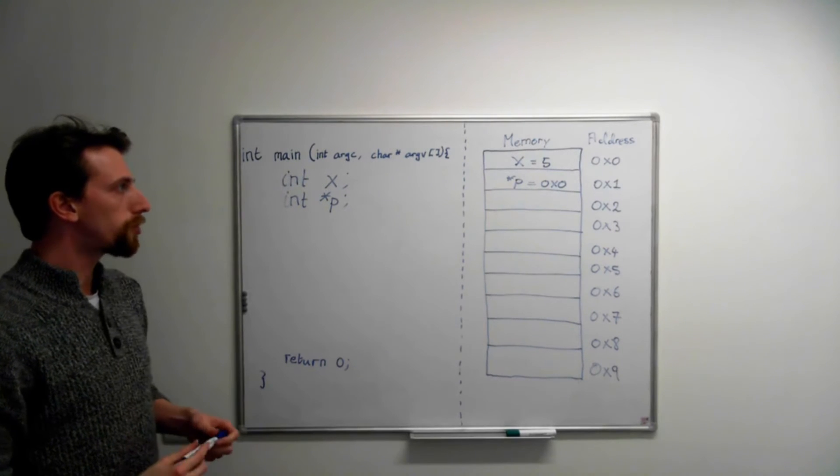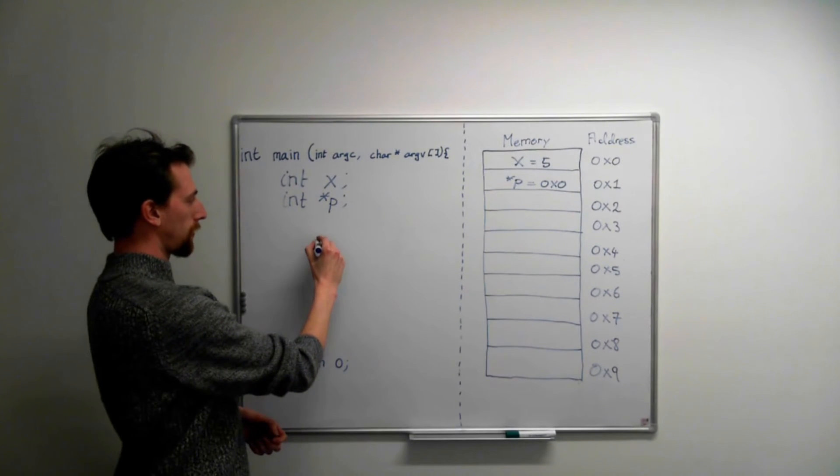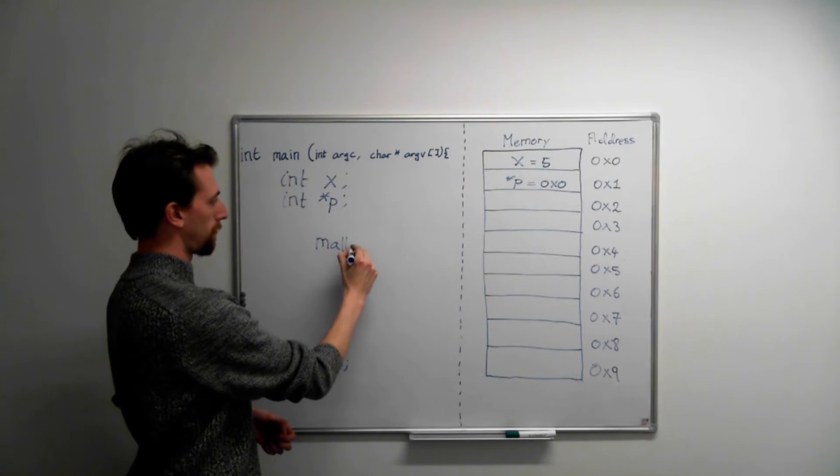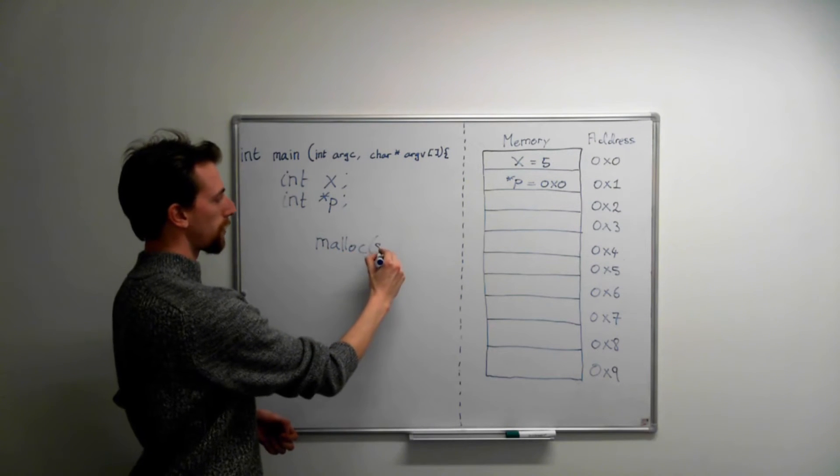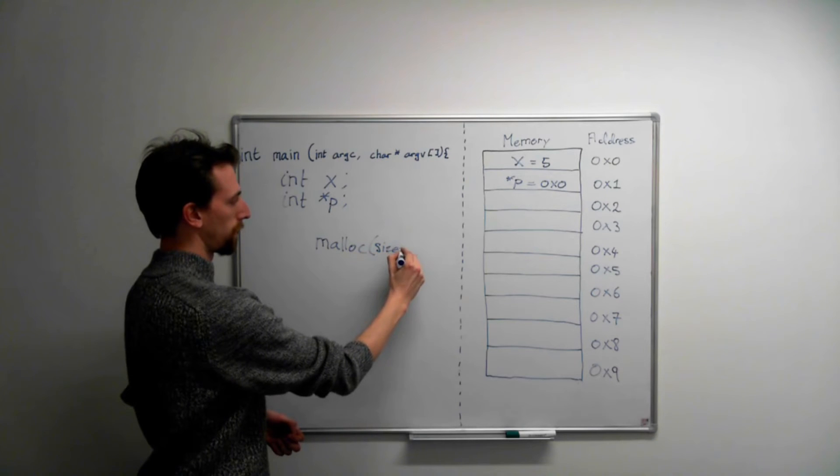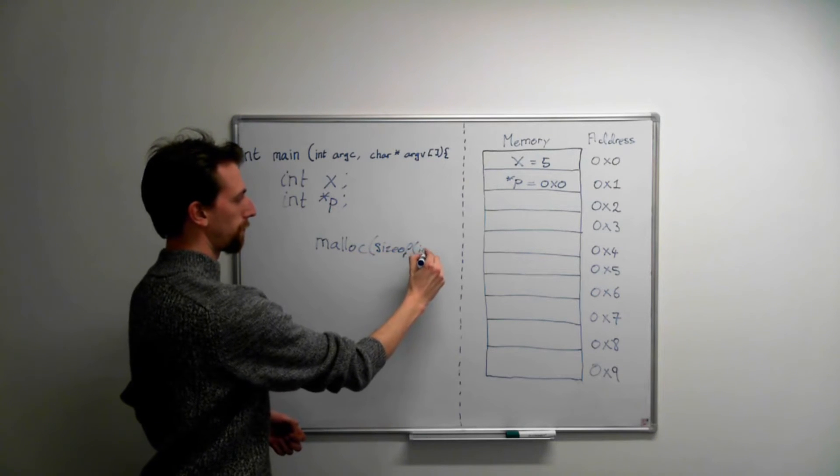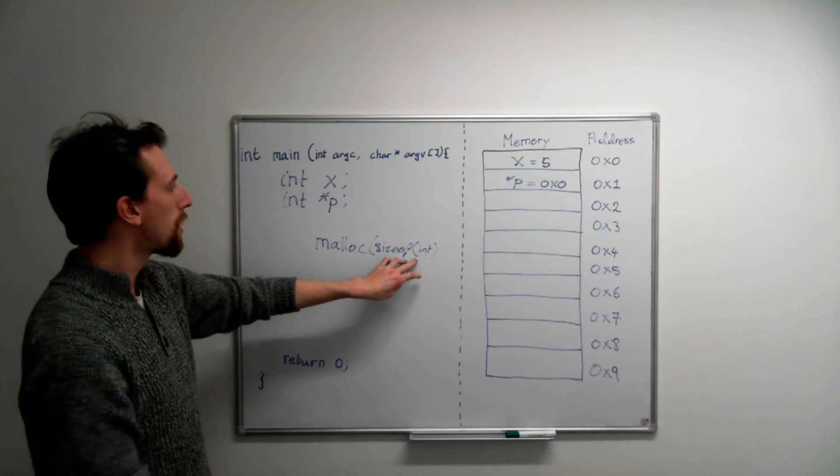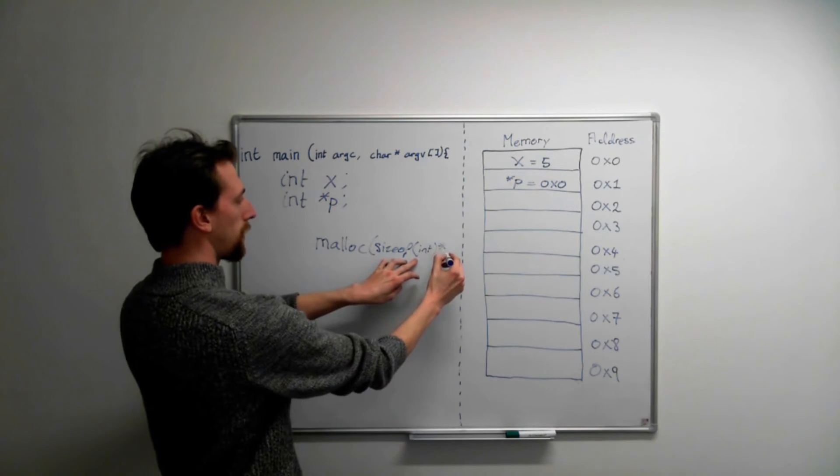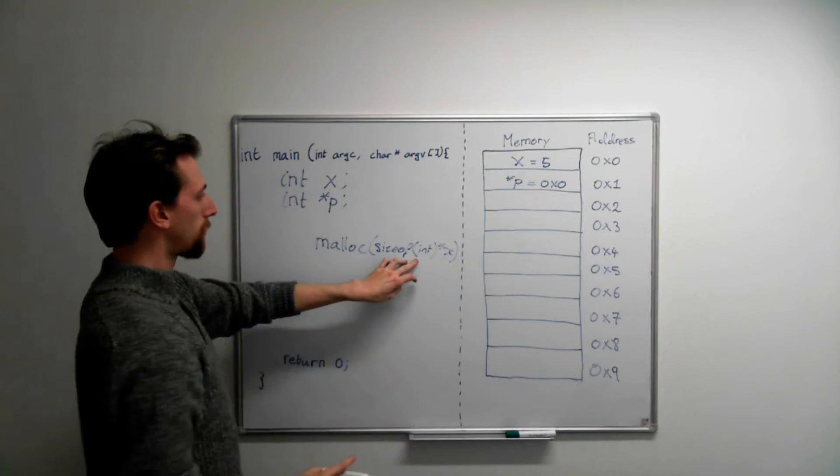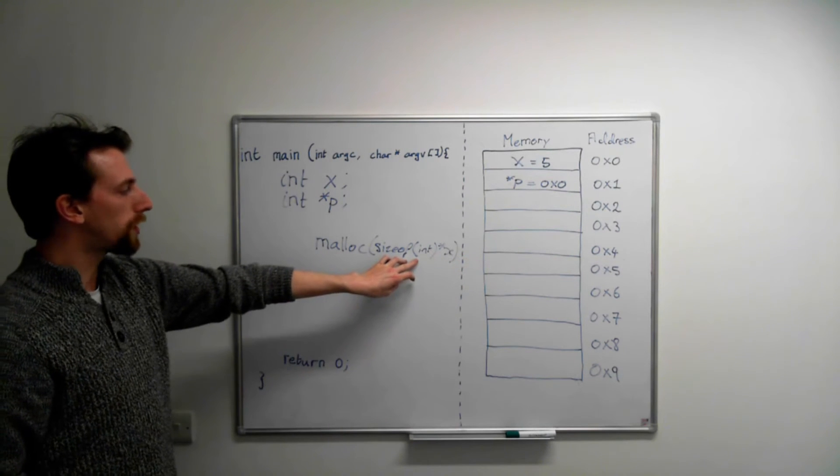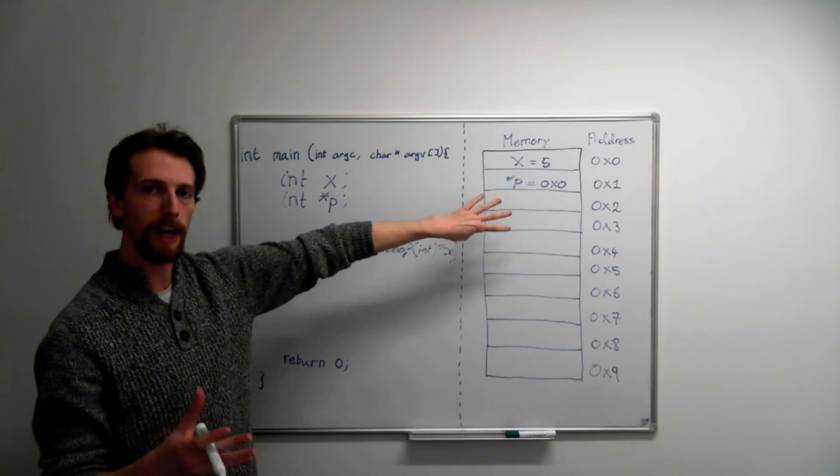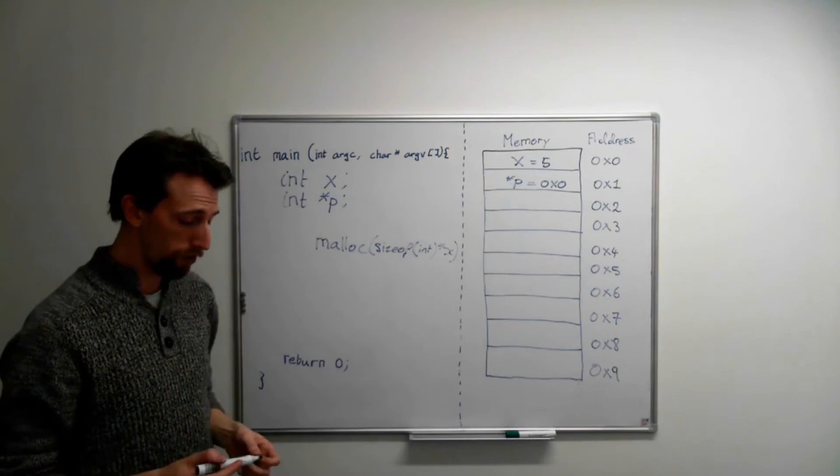What we do is we use a function called malloc, which stands for memory allocation. And we go size of an int, because we need an integer's amount of space, multiplied by the value in x. So this will give us 5 blocks and it will allocate them specifically for us to use for our new array.